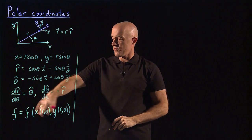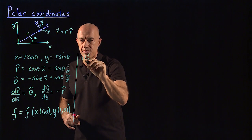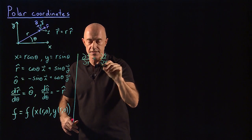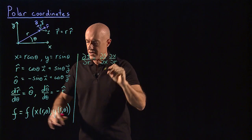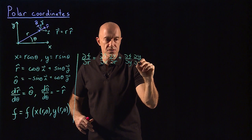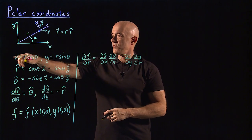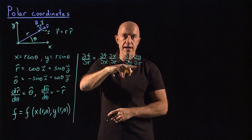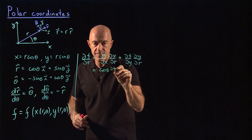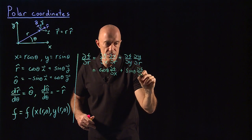Let's use the chain rule to find the derivative of f with respect to r. The partial of f with respect to r equals the partial of f with respect to x times the partial of x with respect to r, plus the partial of f with respect to y times the partial of y with respect to r. Partial of x with respect to r is cosine theta, and partial of y with respect to r is sine theta. So we have cosine theta times partial f partial x, plus sine theta times partial f partial y.